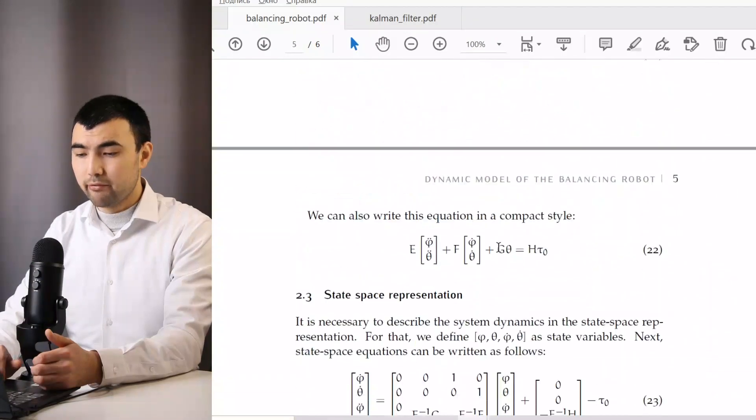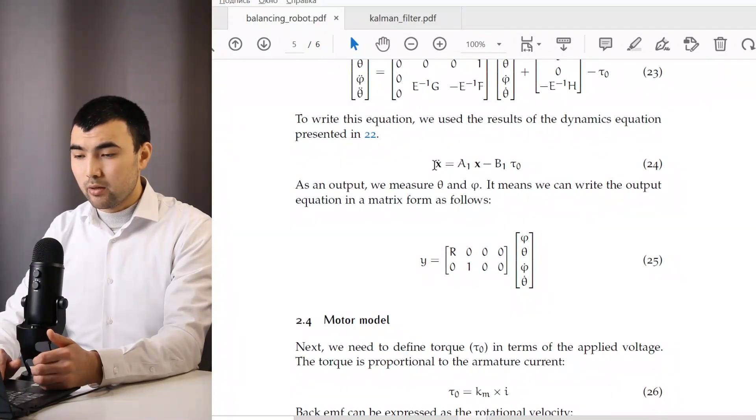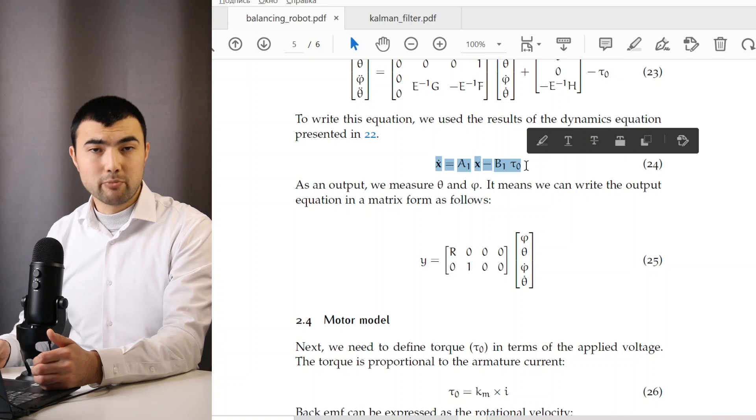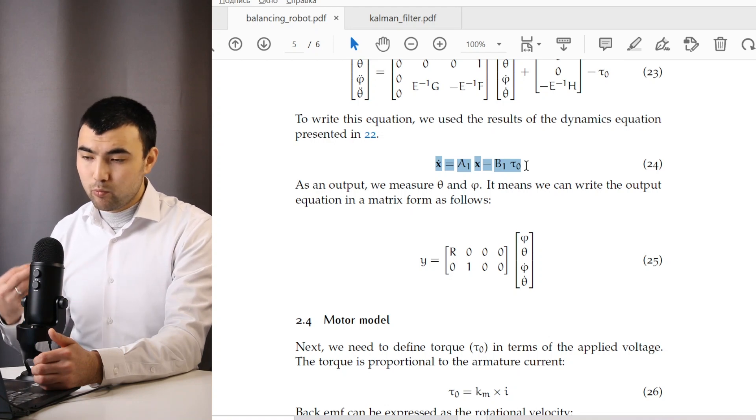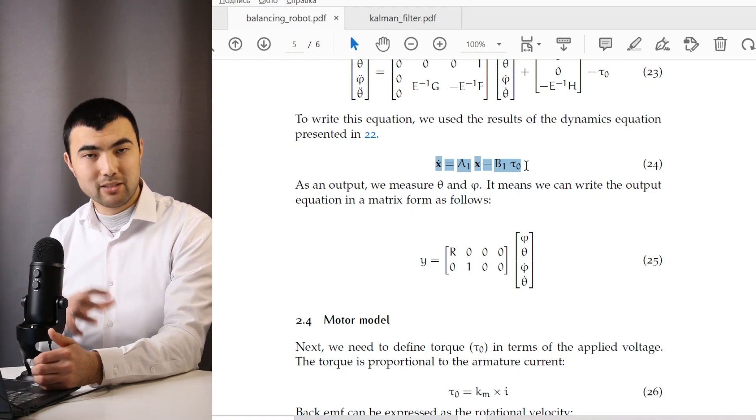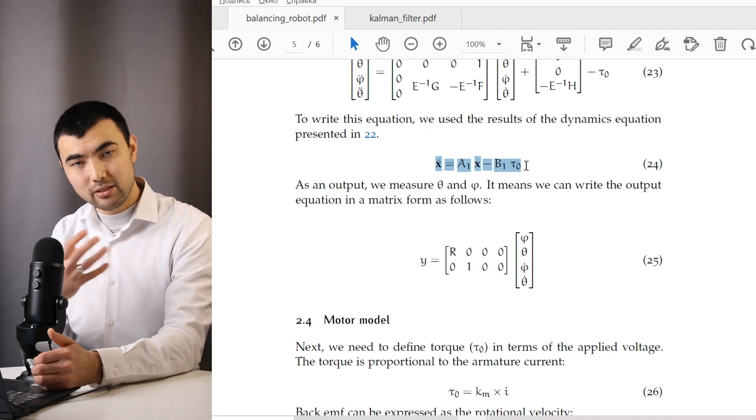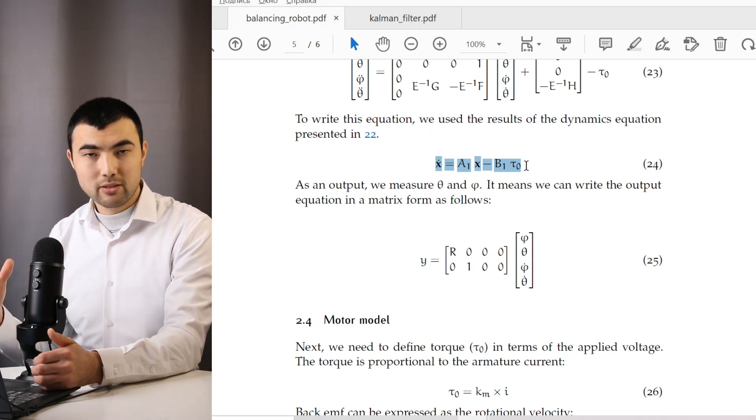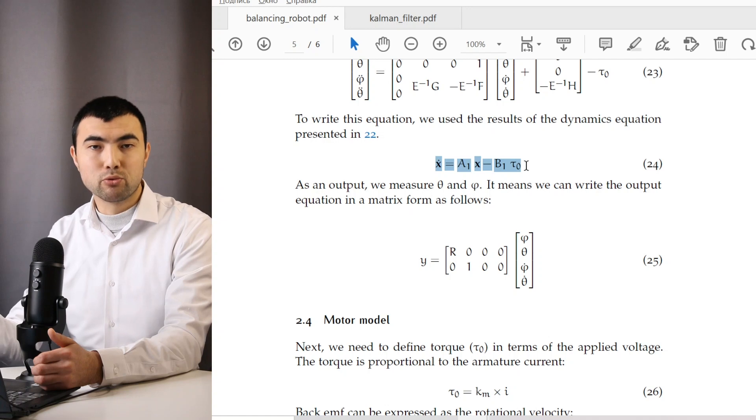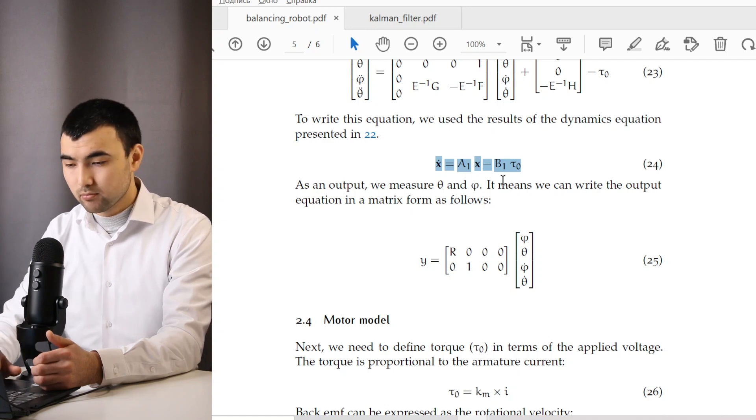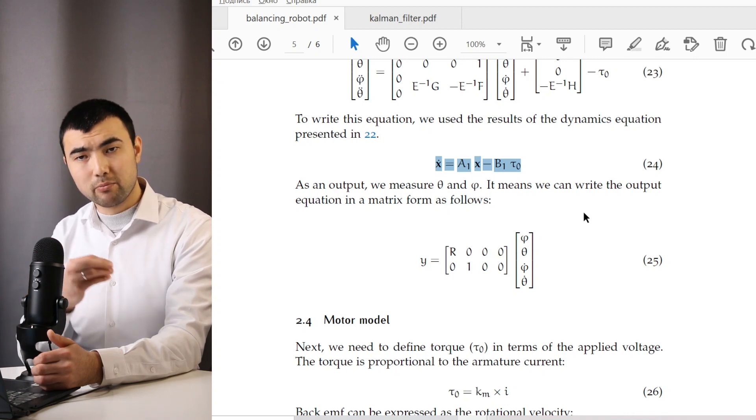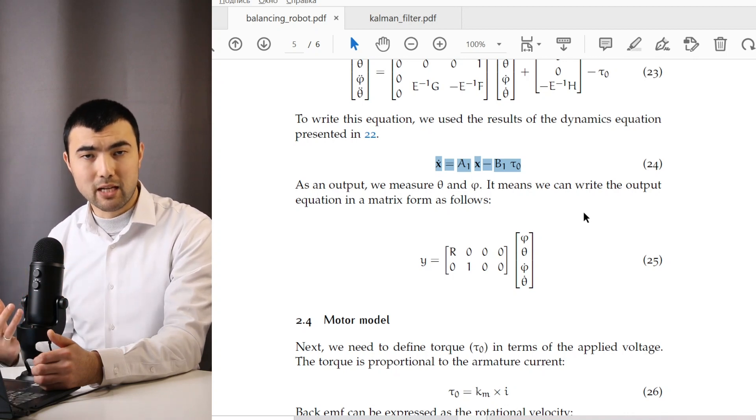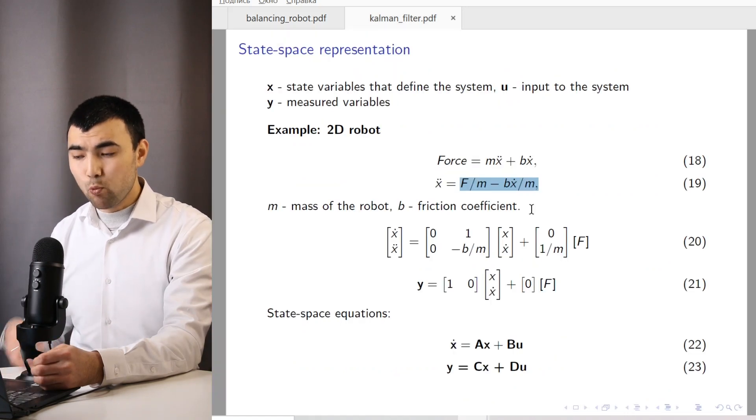Then I use Newton's laws and other fundamental laws to define the dynamics. Then using these equations, I finally extract the state-space equations. Then using these state-space equations, I can design the controller without using the balancing robot. So before actually designing the system, I can model the system and I can use this model to design the controller. And I can run many tests before making the robot itself.